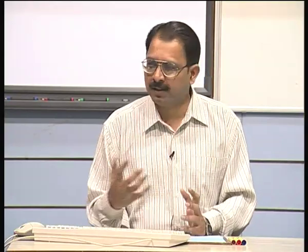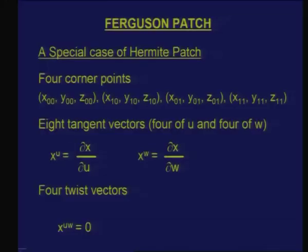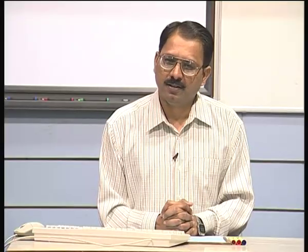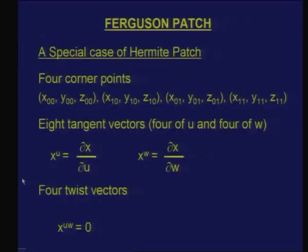Given four curves, this interpolation method was first proposed by Coons, hence it is called a Coons patch. There is another variation proposed by Ferguson. The Ferguson patch can be easily understood from the geometric form of a bicubic Hermite patch. The inputs to a bicubic Hermite patch are four corner points, tangent vectors with respect to u and w, and twist vectors (second derivatives). If the twist vectors are set to zero while keeping all other inputs the same, the result is a Ferguson patch.